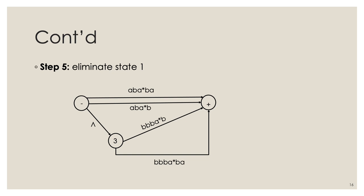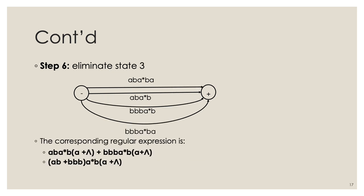Next, eliminate state 1: incoming is the initial state (minus), outgoing is the final state (plus), so we can leave them in parallel for now. Then eliminate state 3 similarly, giving a single transition from minus to plus. We now have four edges in parallel between minus and plus, which we aggregate into one edge using the union of all four regular expressions.